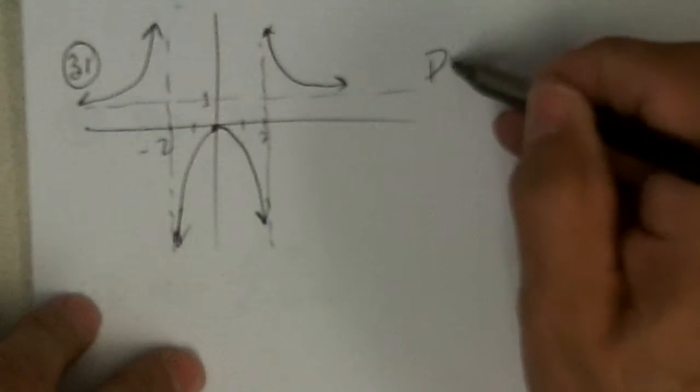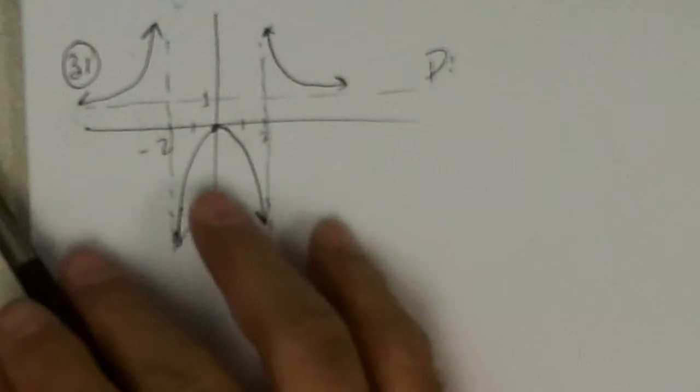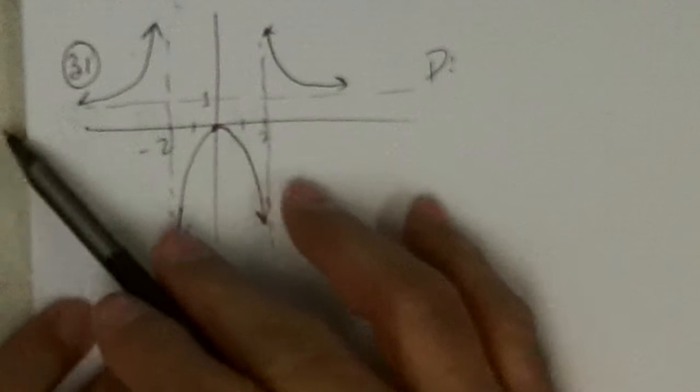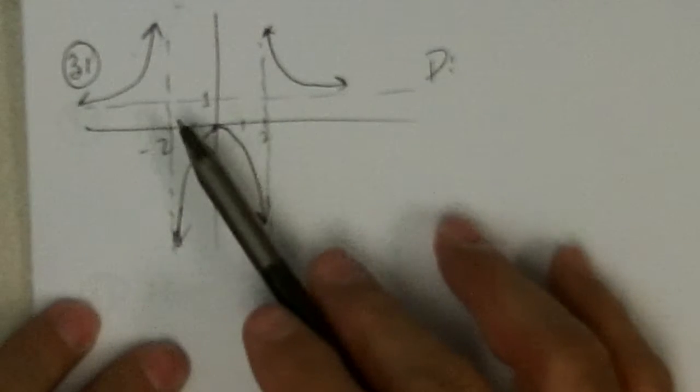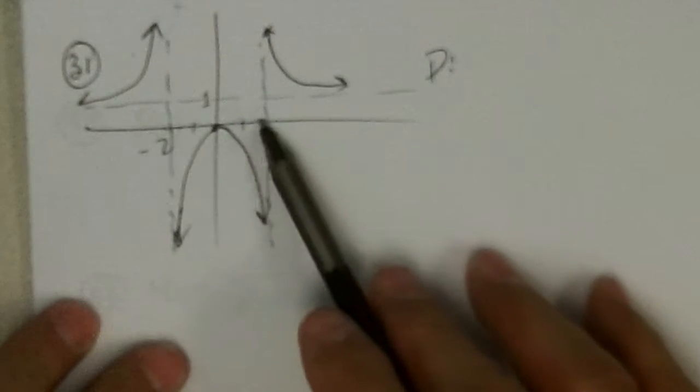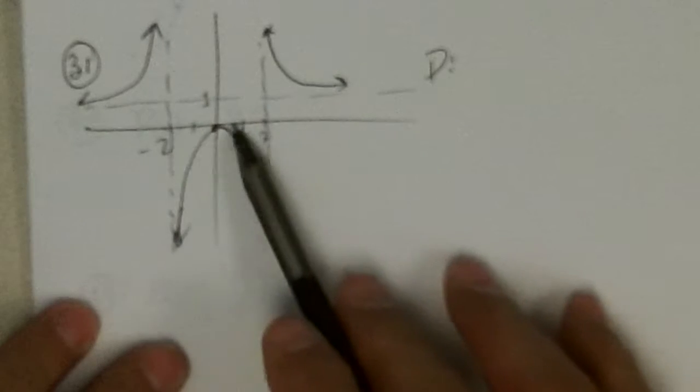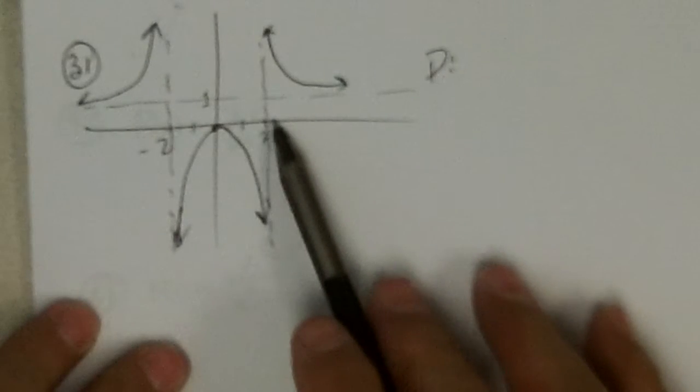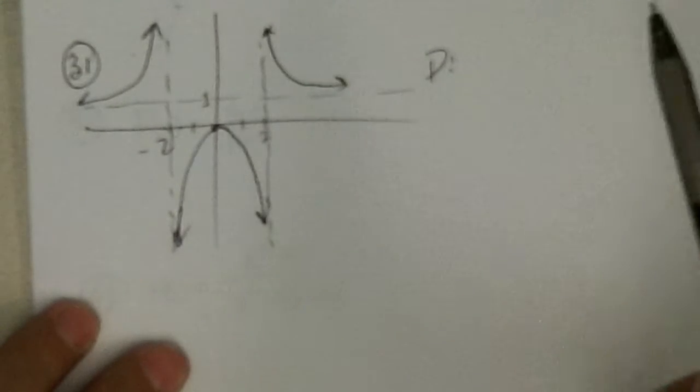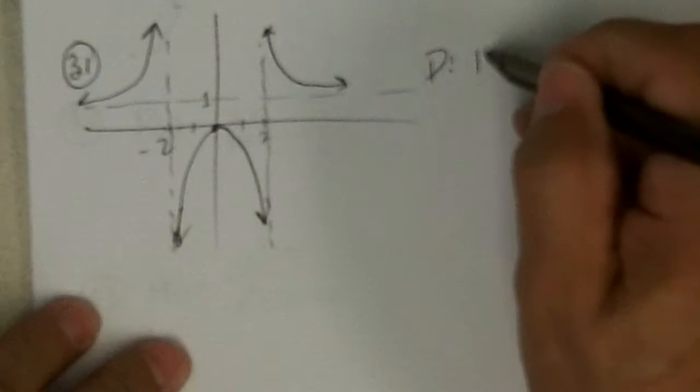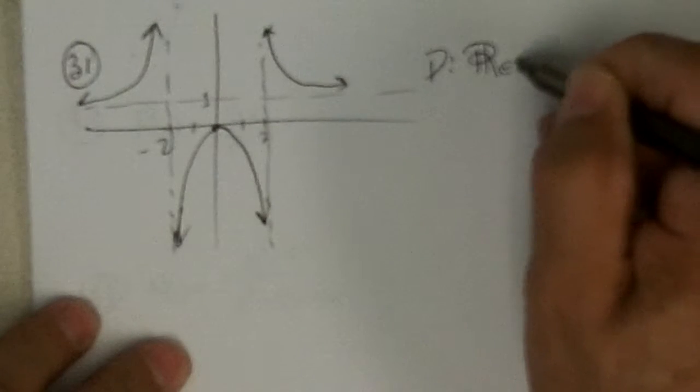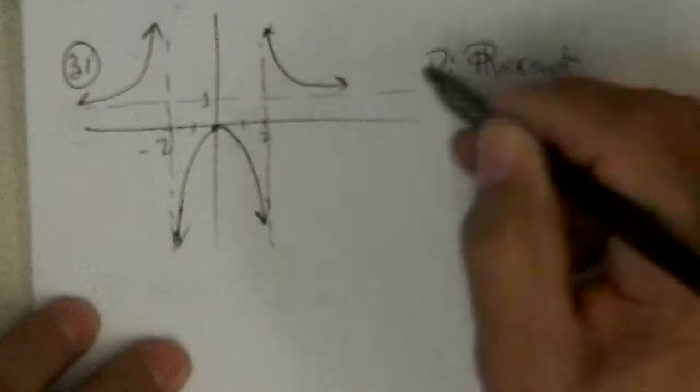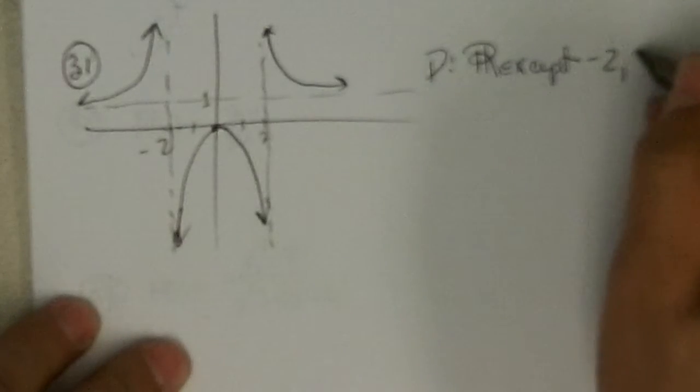31. The domain. Well, there's curve way out here at negative infinity all the way up to minus 2. Then it skips minus 2. Then there's curve for all the x's in here. Then it skips 2. And then there's curve for all these x's out here. So the domain is all reals except negative 2 and 2.